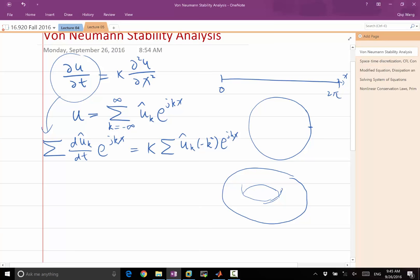So jk squared is minus k squared times e to the jkx. Both are summations over k goes from minus infinity to infinity.